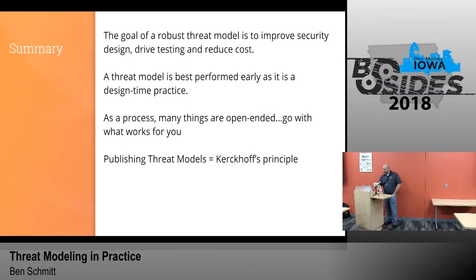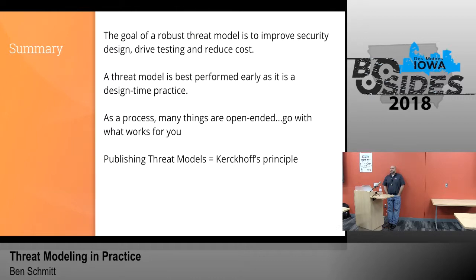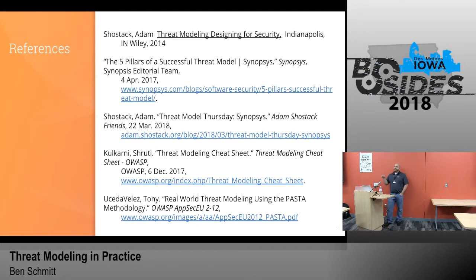The goal of a robust threat model: improved security design, drive testing, reduce cost. This is a design-time practice — you don't build an app and then ask someone to pen test it two days before launch. It takes discipline to do it early. There's no perfect template, but start with a data flow diagram and look at STRIDE against it. Publishing threat models is rarely done. The OAuth 2.0 threat model published as an RFC is the best example I've seen — not very visual, but very detailed. The five pillars of a successful threat model by Synopsys is outstanding and shows threat actors, data flow, assets, external entities, trust boundaries, and security controls mapped to each threat.